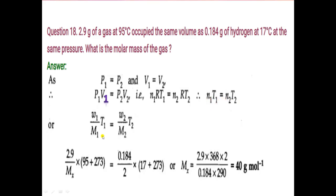We can write number of moles as: (W₁/M₁)·T₁ = (W₂/M₂)·T₂. W₁ is 2.9 g, M₁ is unknown, temperature is 95°C = 368 K. Given mass of hydrogen is 0.184 g, molar mass of H₂ is 2, temperature is 17°C = 290 K. Solving, the value of M₁ comes out equal to 40 g/mol.